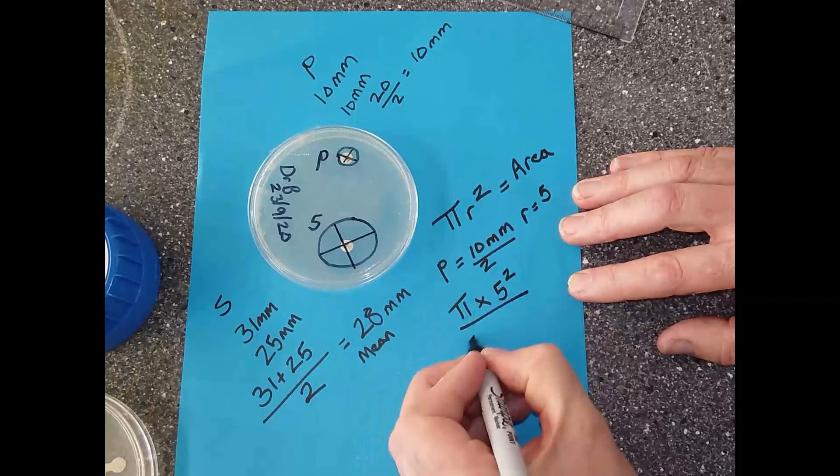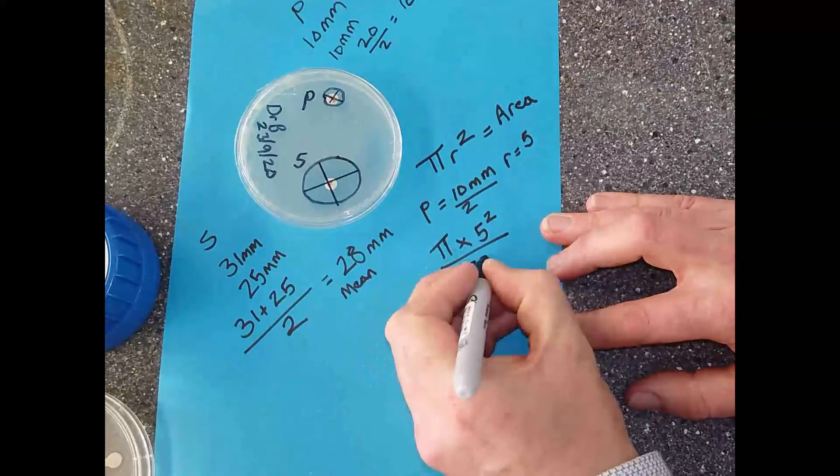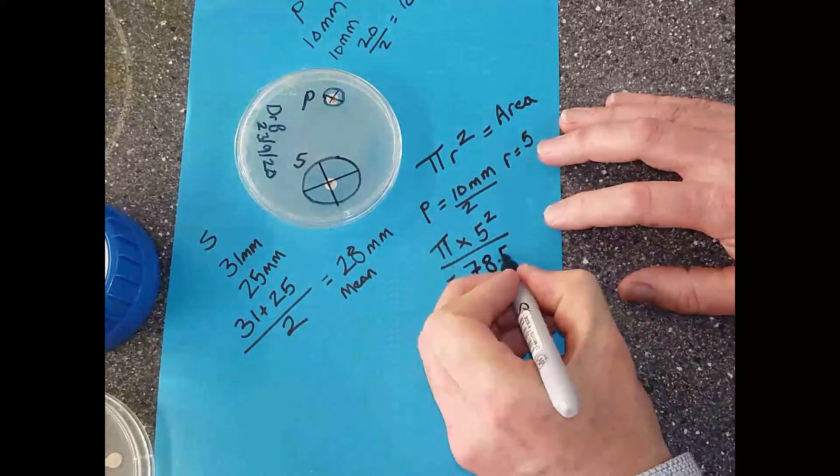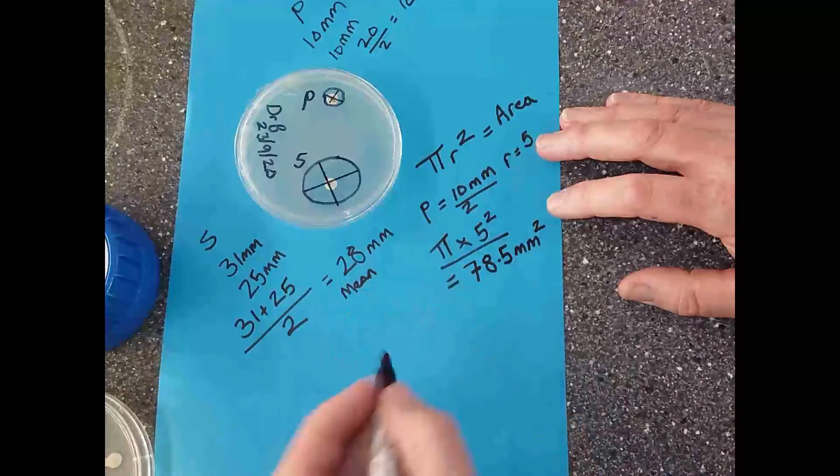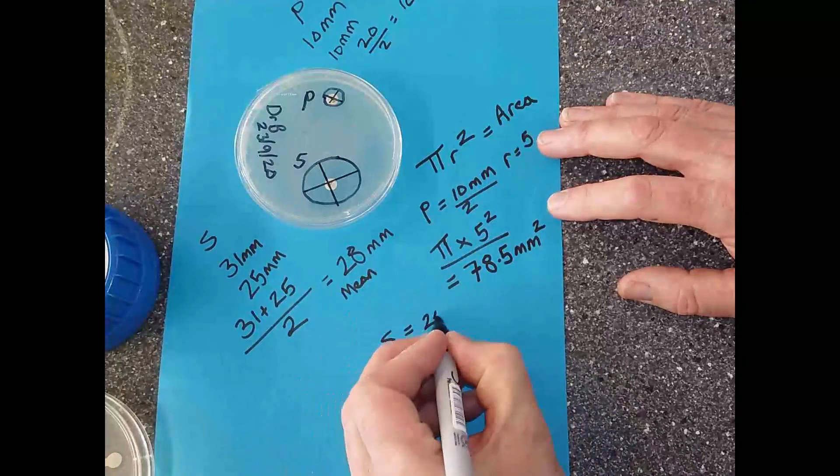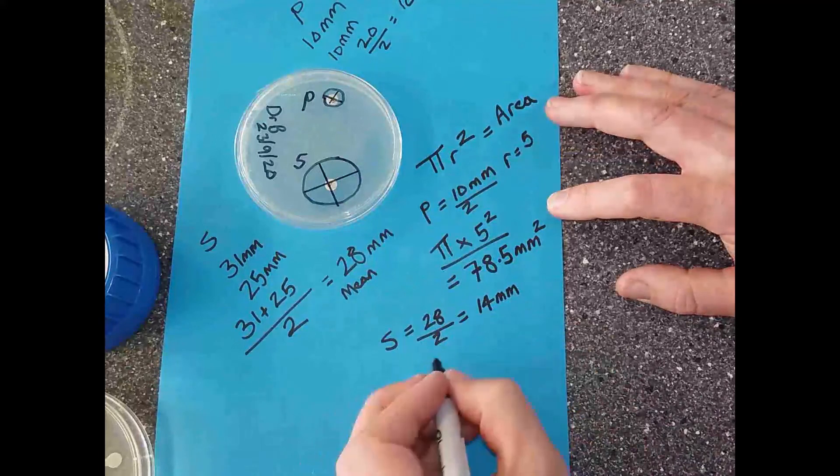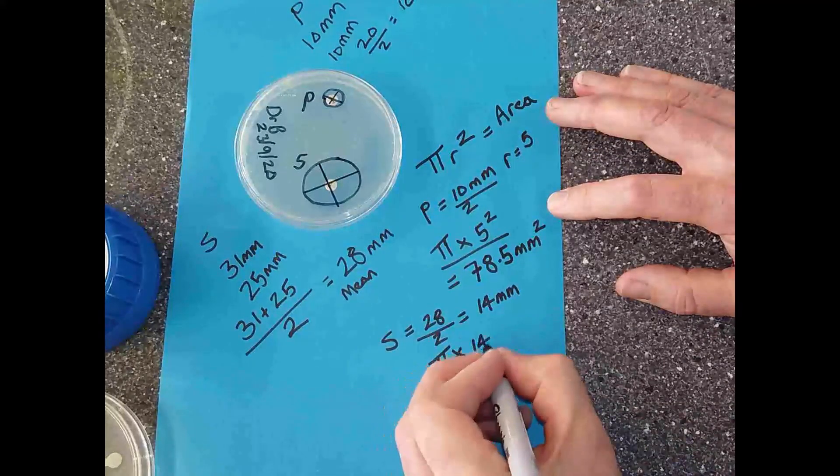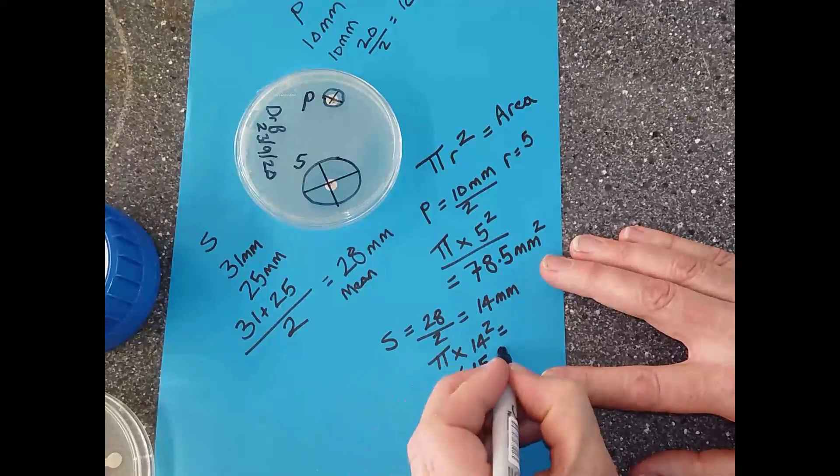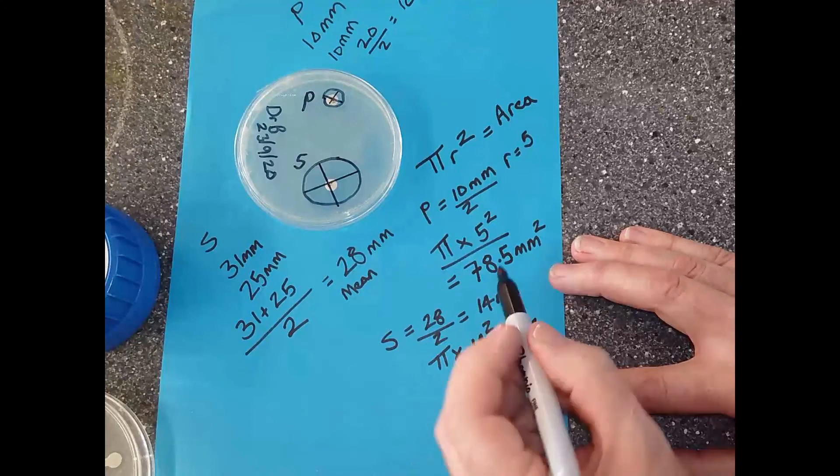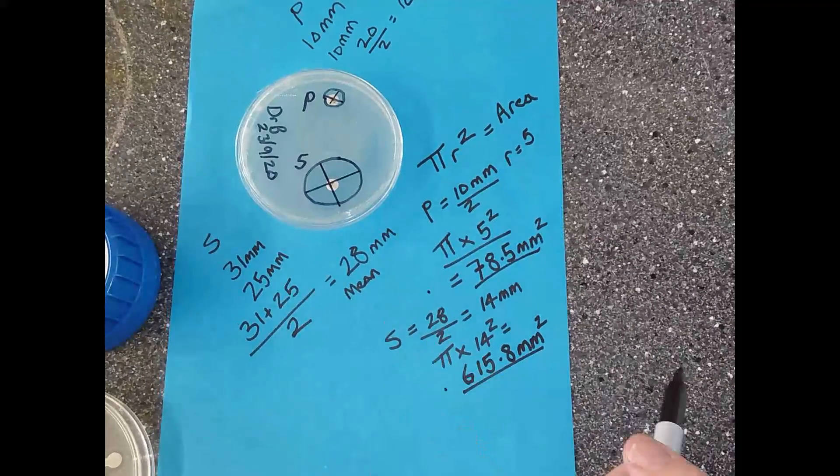I'm reliably informed by one of my students that it is 78.54, so I'm going to go 78.5 millimeters squared. That's telling me the area of the circle for penicillin. For streptomycin, we know it's 28 divided by 2, which gives us 14 millimeters. Then we work out pi r squared - pi times 14 squared. My students have reliably informed me that is 615.8 millimeters squared. Now I have the two areas, and you can see streptomycin is far more effective than penicillin.